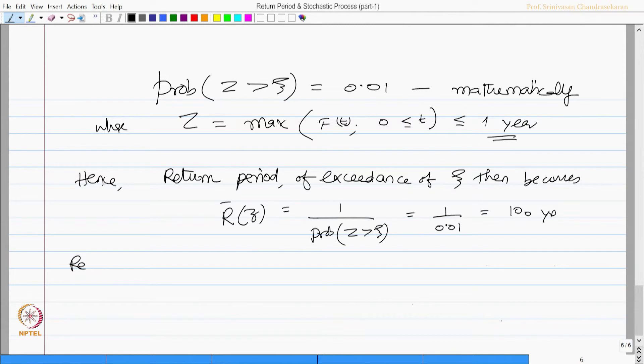So the reference period in the above example is 1 year and return period of exceedance is 100 years.